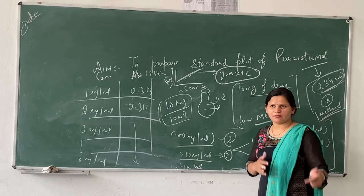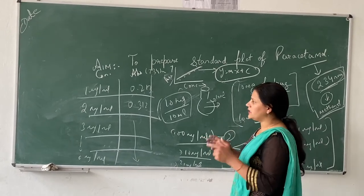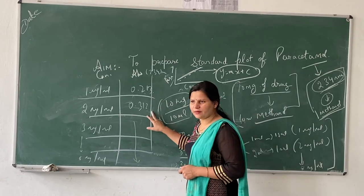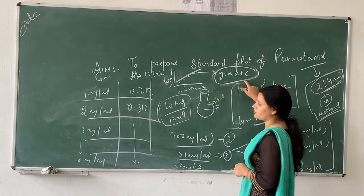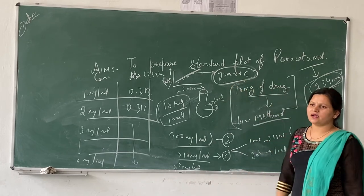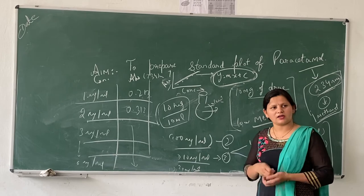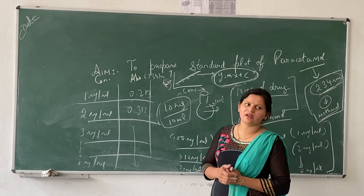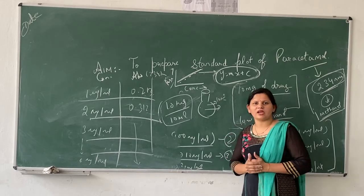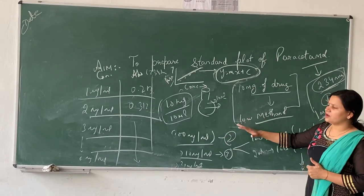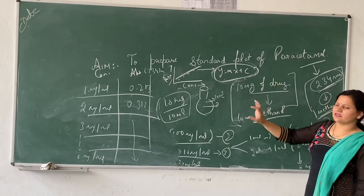If you do not know what the concentration is in any sample, then you only need to measure the absorbance of that sample and then determine the concentration from this equation. So the standard plot of a drug is very important for calculating various pharmacokinetic parameters and for studying various pharmacokinetic activities.